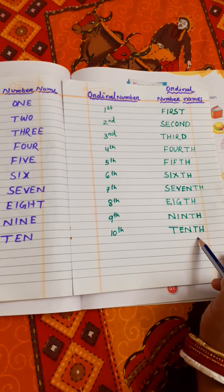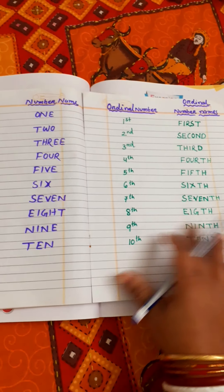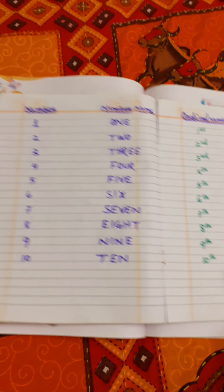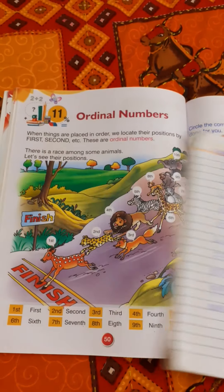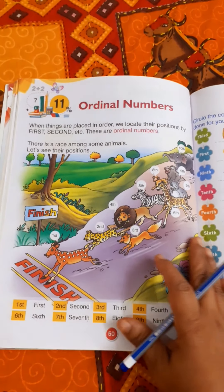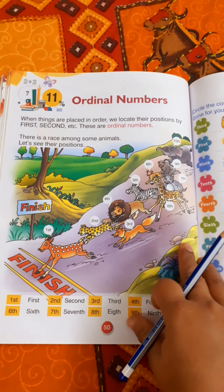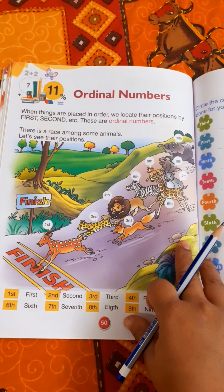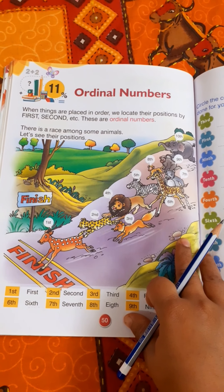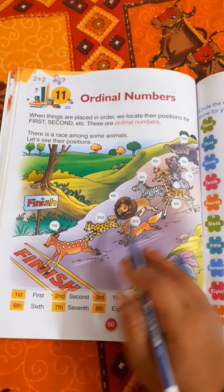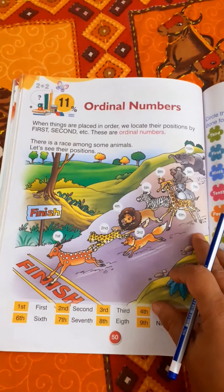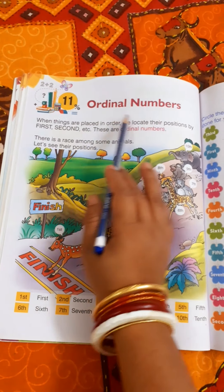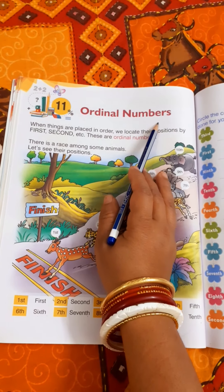Now children, we can easily understand this topic with the given picture. Take out your math book, page number 50, chapter number 11, Ordinal Numbers.